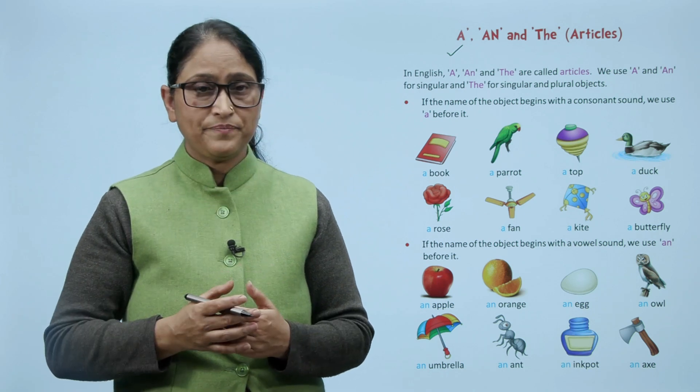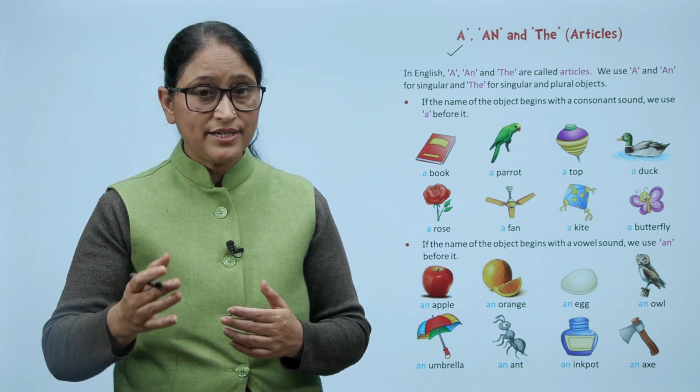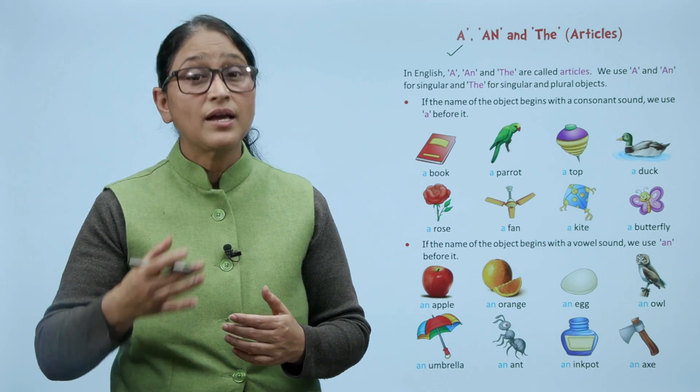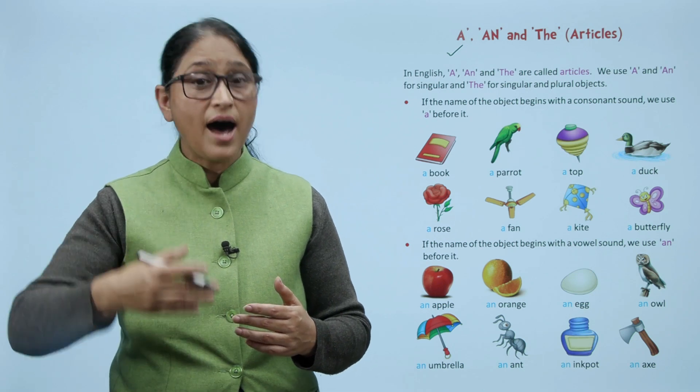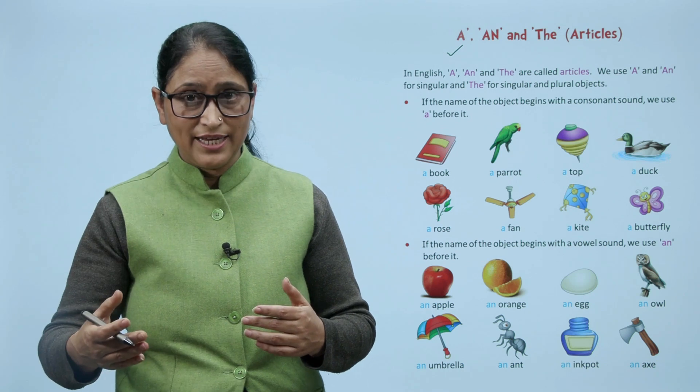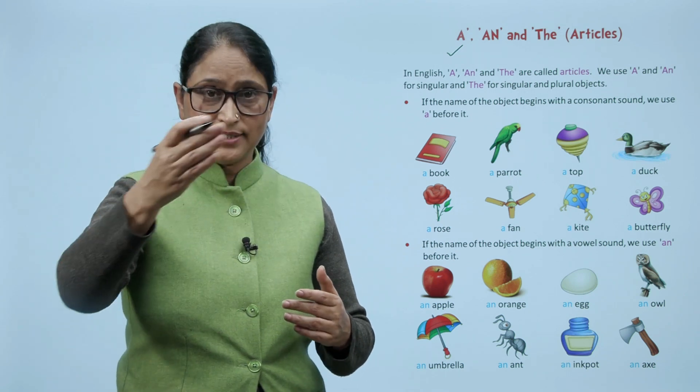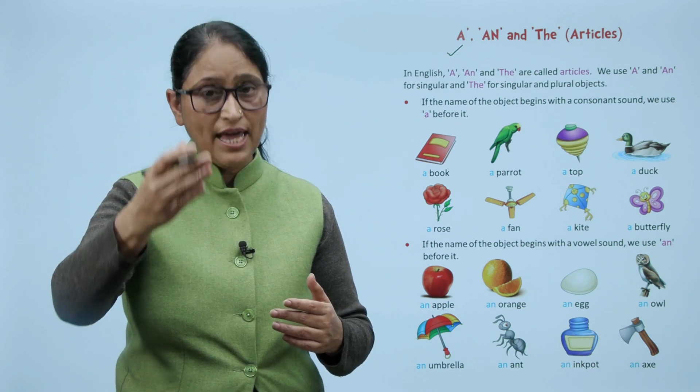The next is parrot - A parrot. A top, A duck, A rose, A fan, A kite, A butterfly. These words start with consonant letters - B, P, T, D, R, F, K, B. Ye consonants hain, in se pehle hamne kya use kiya? A.